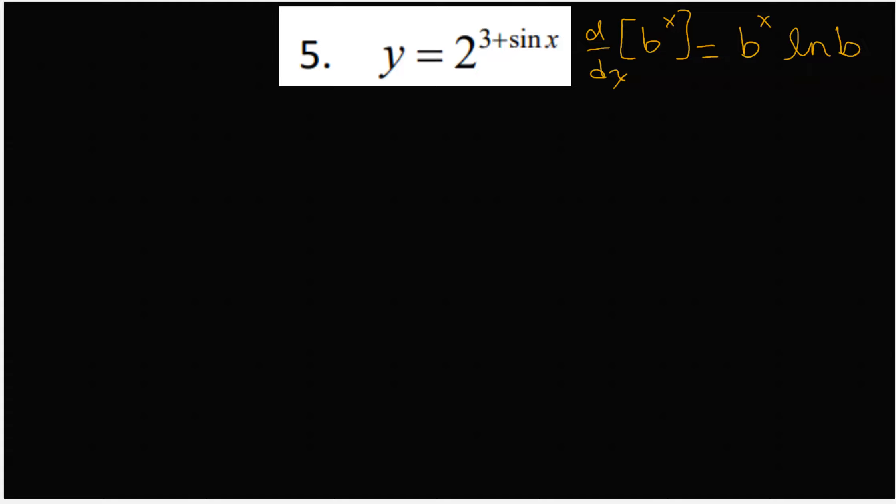Then we also have a chain rule going on here where the inside function involves a derivative of sine. The derivative of sine of x is cosine of x. Those are the two things that we need to know in order to complete this problem.